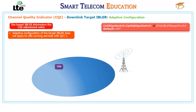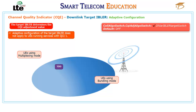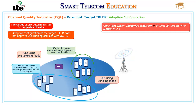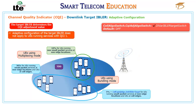For TDD, there are two types of HARQ feedback: multiplexing and bundling. For UEs using multiplexing mode, the behavior is the same as FDD — the target BLER is adjusted to 10% for UEs running non-small packet services at non-edge locations, and 30% for UEs running small packet services at non-edge locations and UEs at cell edges. For UEs using bundling mode, 10% for non-small packet services at non-edge locations, and 5% plus the initial downlink BLER target parameter value for UEs running small packet services at non-edge locations and UEs at cell edges.